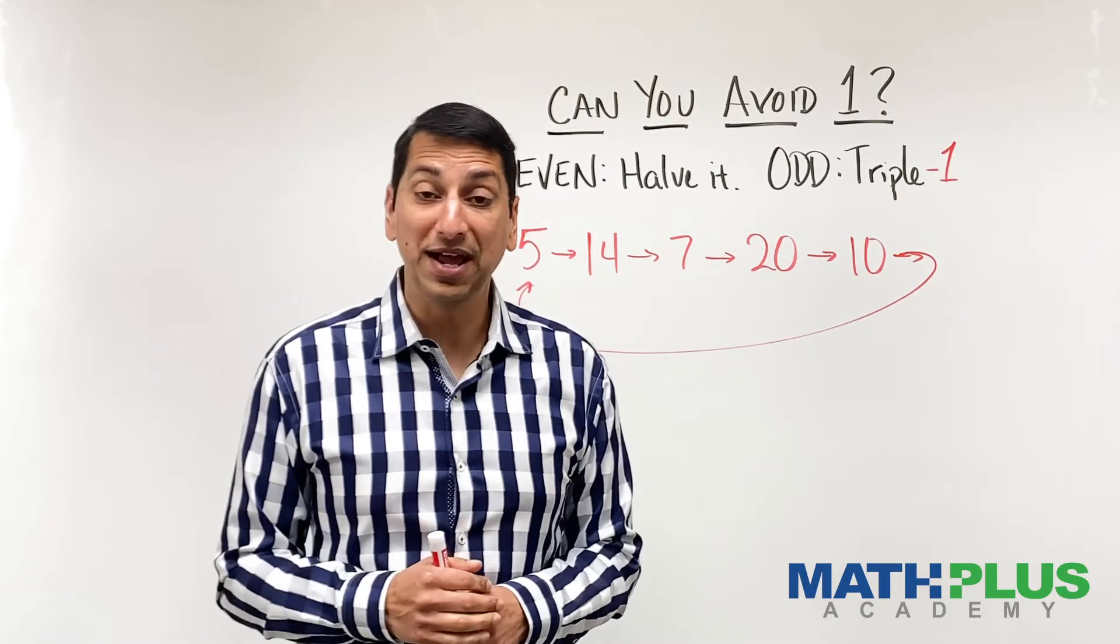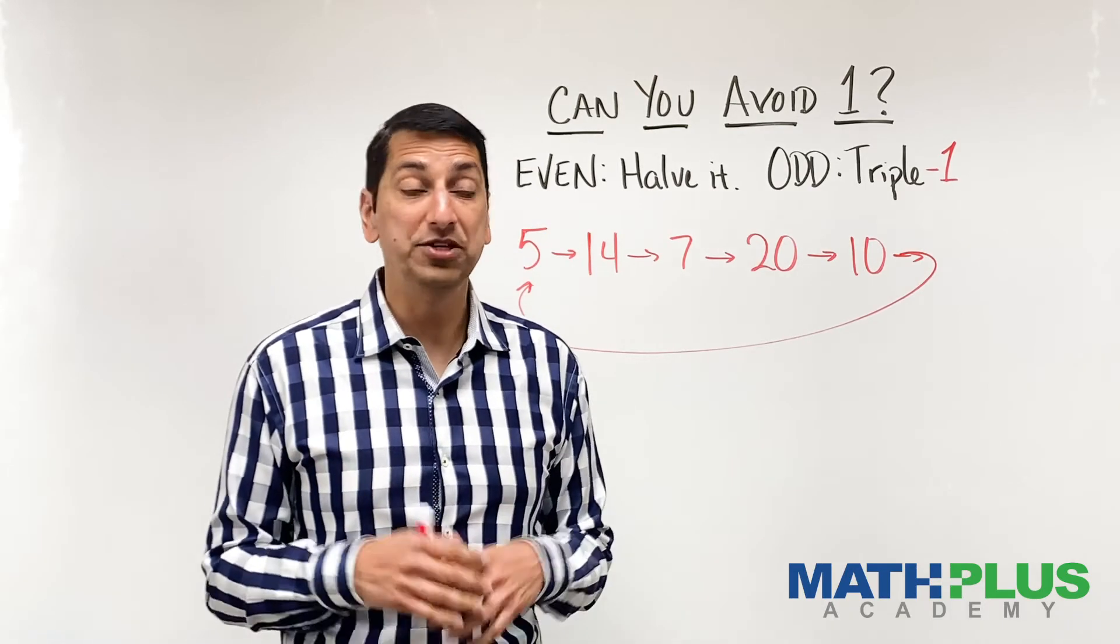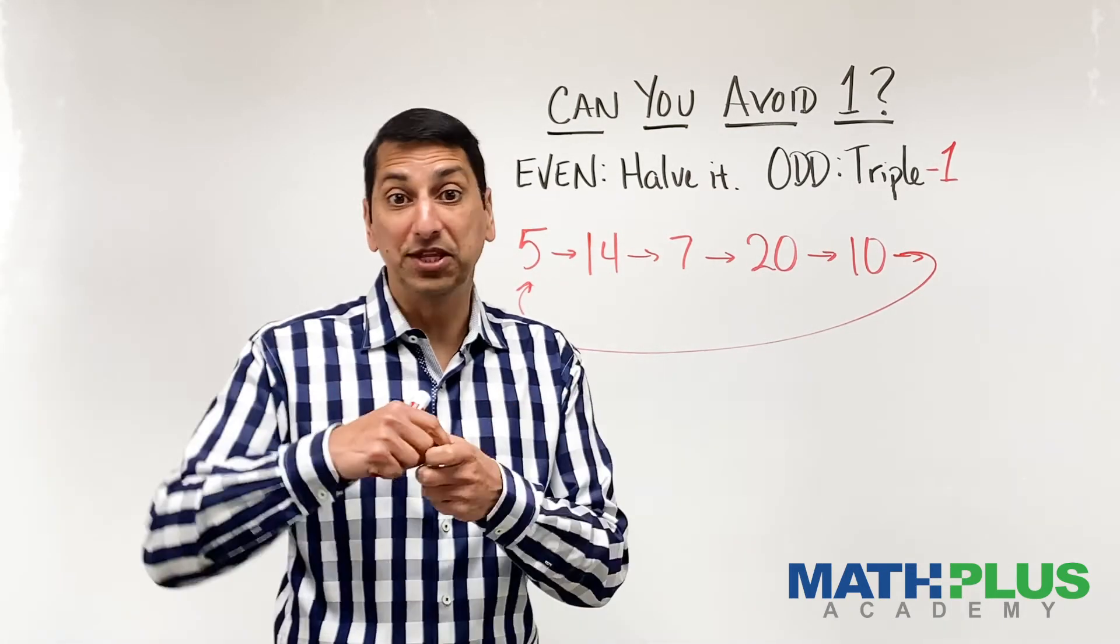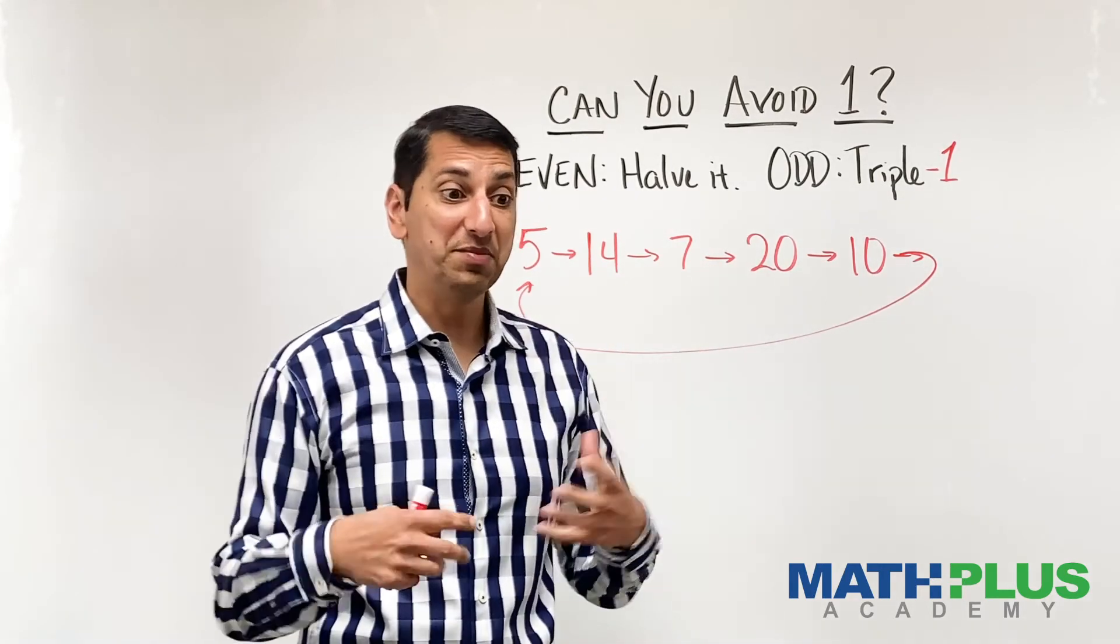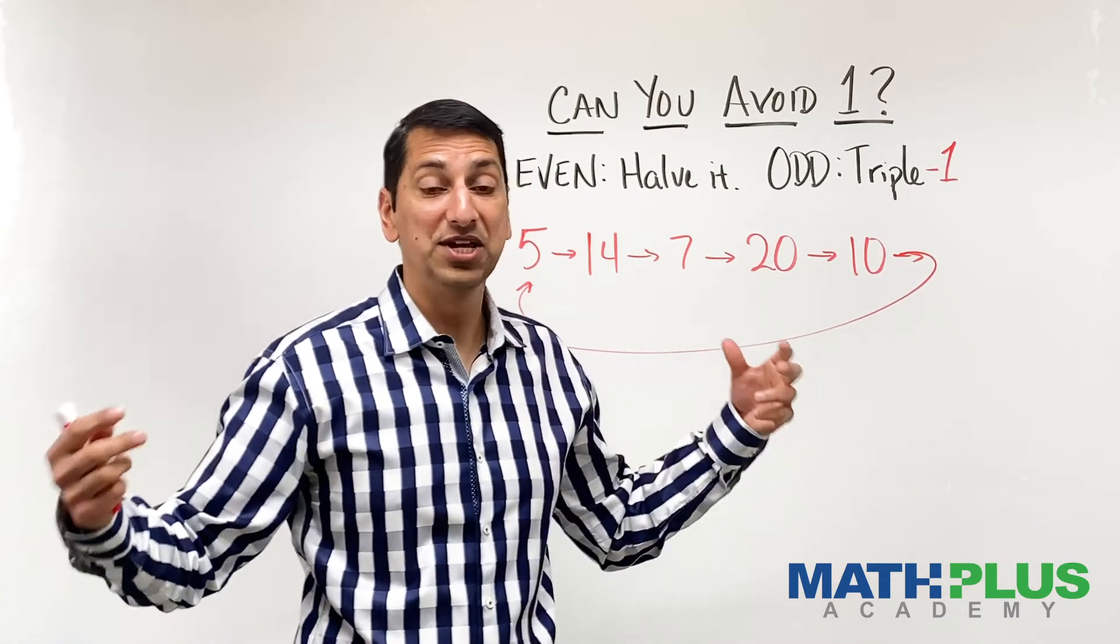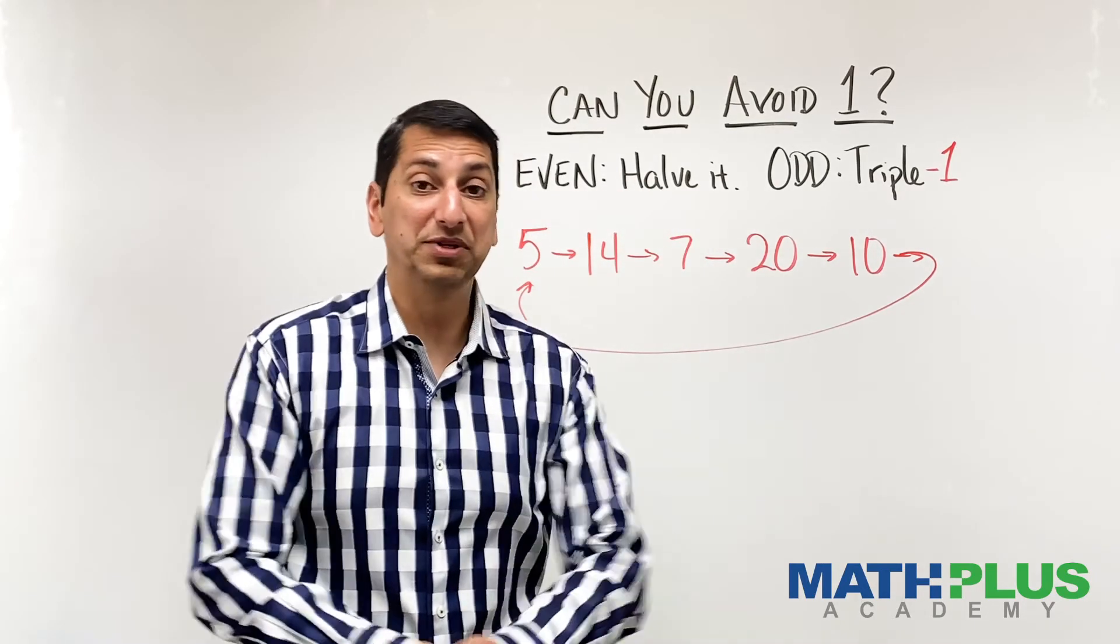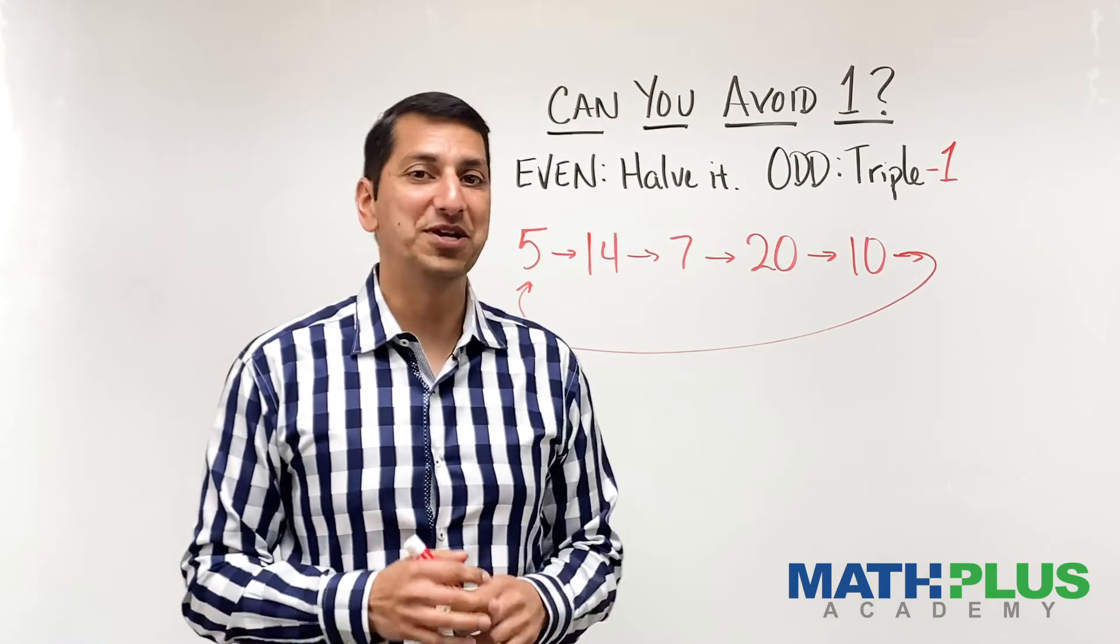And another question you might ask is for the tripling plus one, you could ask, you know, what is the longest string I can make before I get to four, two, one? Like, are there some numbers that generate really long patterns? Are there some numbers that get to four, two, one really quickly? All interesting questions for you to explore.